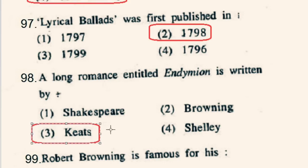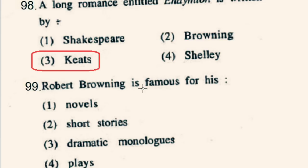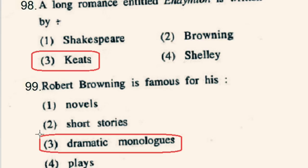Question number 99: Robert Browning is famous for his what? Robert Browning was born on 7th May 1812 in Camberwell and died on 12th December 1889 in Venice. He was an English poet and playwright whose mastery of dramatic monologue made him one of the foremost Victorian poets. So the right option will be 3rd option: dramatic monologue.